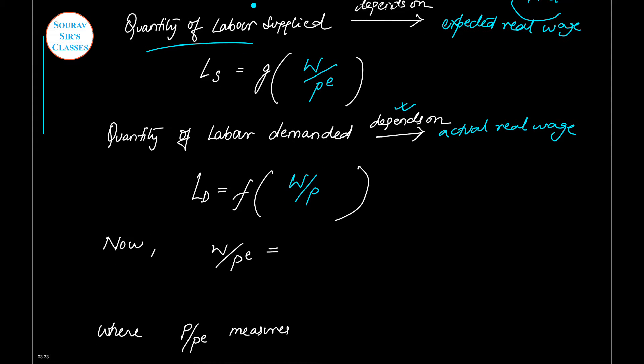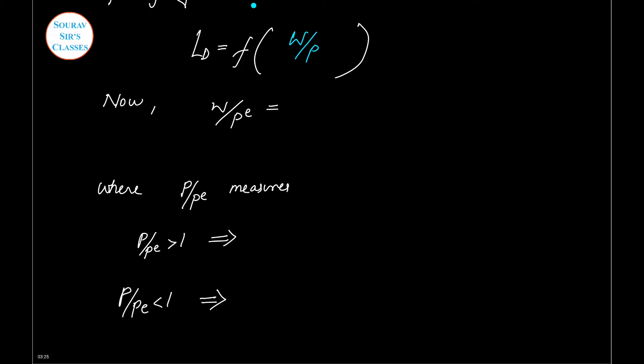Now W/PE can also be written as W/P times P/PE. So you can cancel out P and you will be left with W/PE. Now why we are writing this? This is the real wage, and this particular term P/PE measures misperception. So it measures the misperception of the price level.